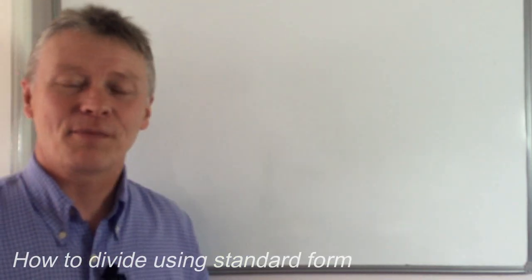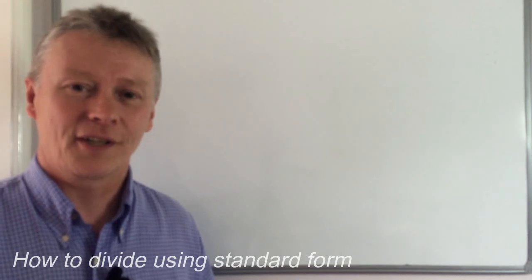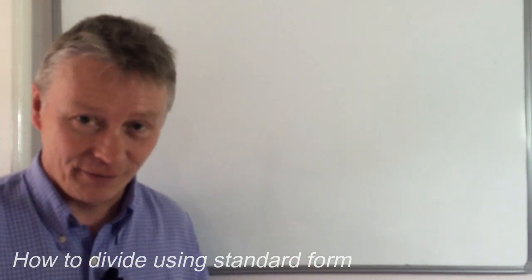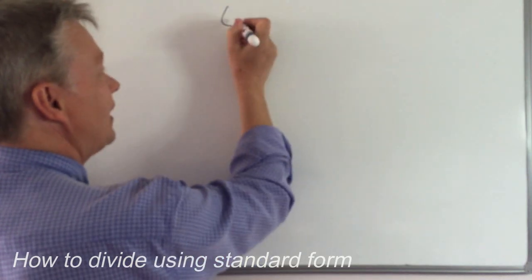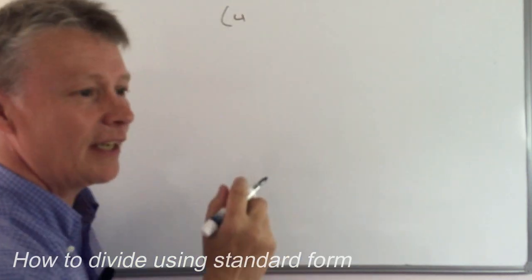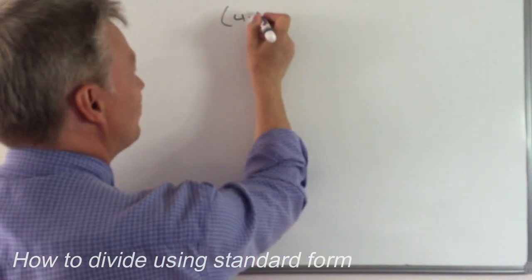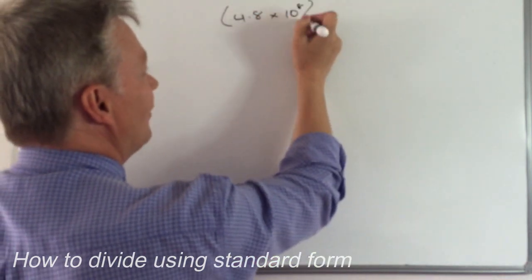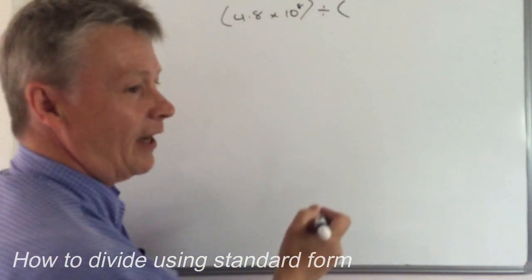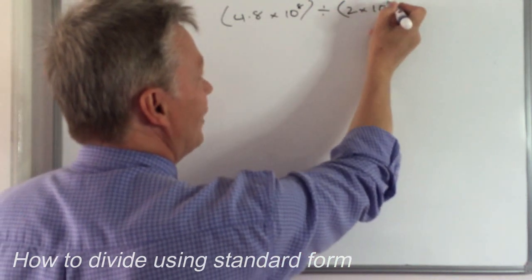So in the previous two videos we talked about how to write numbers in standard form and how to multiply numbers. This particular video we're going to be looking at these type of questions where we might get something like this. It's 4.8 times 10 to the power of 8 and that's divided by 2 times 10 to the power of 3.